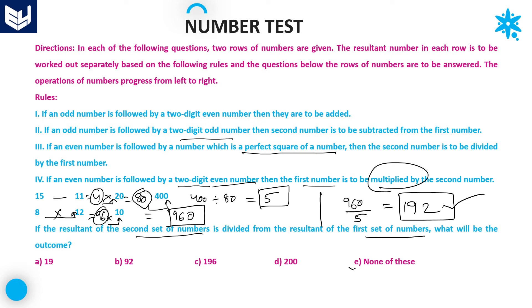192 is the right answer, option E. However, 192 is not present in the given options — 19, 92, 196, and 200 are listed but not 192. So option E (none of these) is the correct answer.